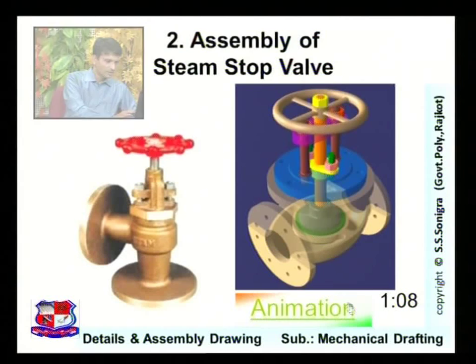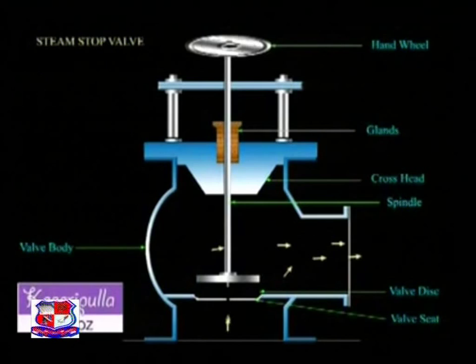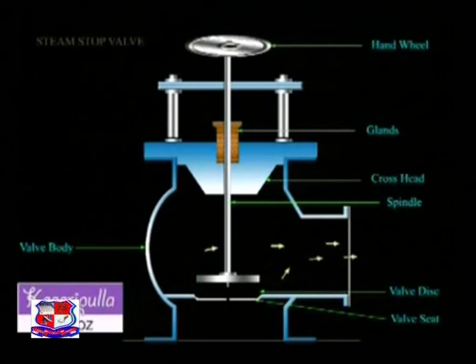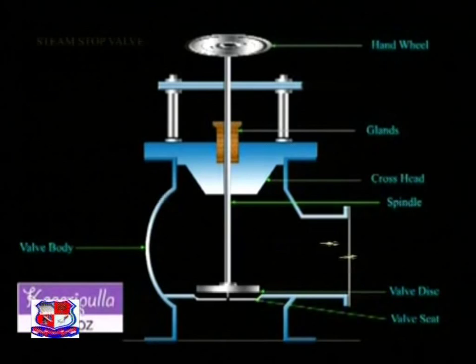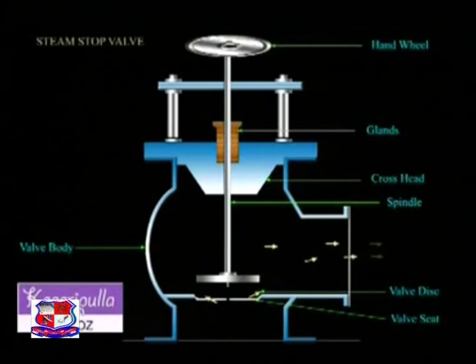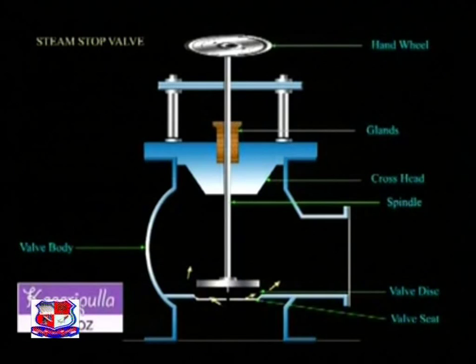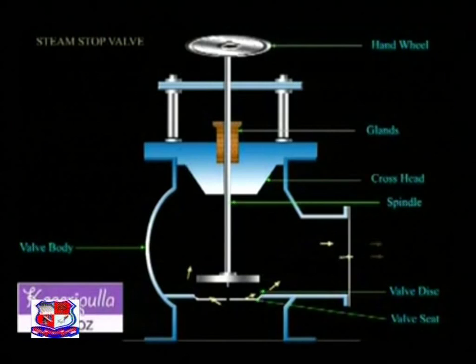The working of the steam stop valve is as follows: as the hand wheel is rotated in the clockwise direction, it pulls up the disk valve, allowing the release of steam as indicated by yellow arrows in the figure. The degree to which the disk valve is raised from the valve seat regulates the quantity of steam discharged. If the hand wheel is rotated in the anticlockwise direction, it reduces the clearance between the valve and its seat, cutting down the quantity of steam and ultimately cutting off the steam supply completely once the valve engages the seat.